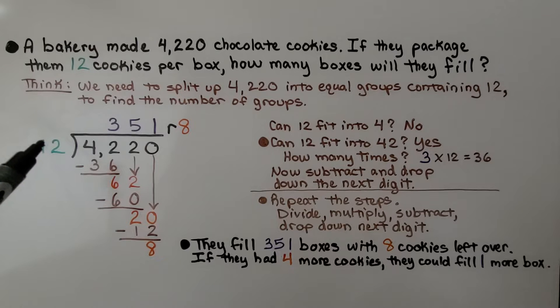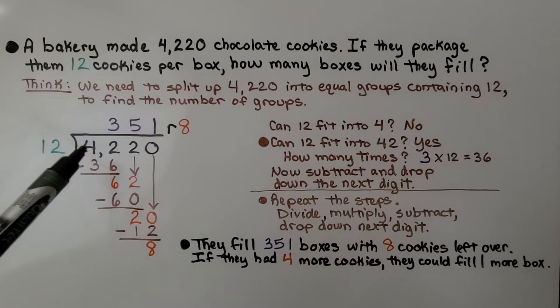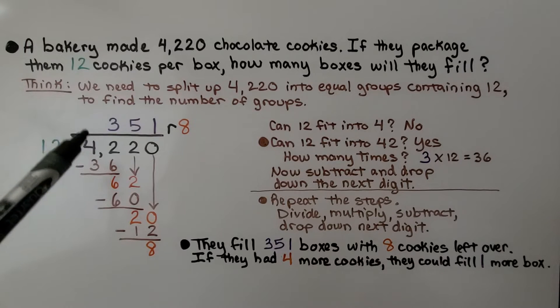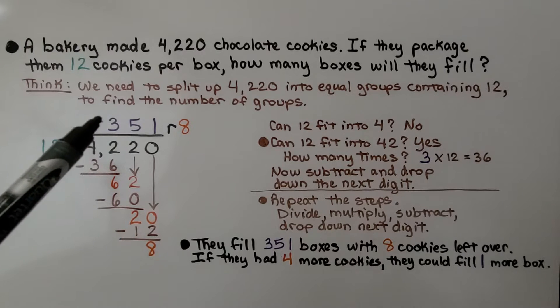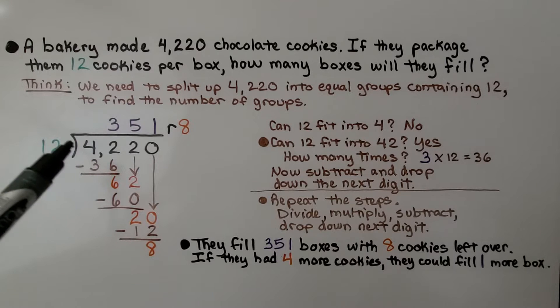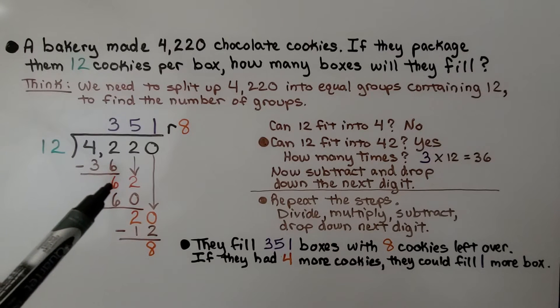We have 4,220 divided by 12. Can 12 fit into this 4? No. So the answer does not go above the 4. Can 12 fit into 42? Yes. How many times? 3 times, because 12 times 3 is 36. We do the multiplication, we subtract and we get a 6.